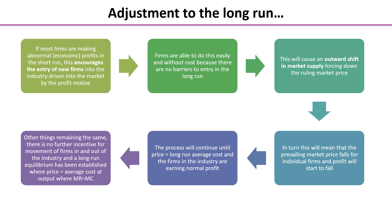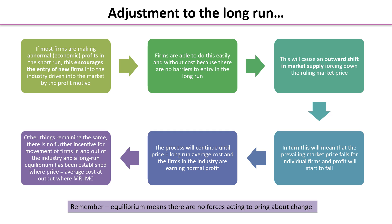As the prevailing price falls, the demand curve and AR curve for individual firms shift down, causing their profit to fall. This continues until only normal profit is being earned. At that equilibrium point, there is no further incentive for firms to move in or out of the industry — equilibrium being a situation where no forces are acting to bring about change.